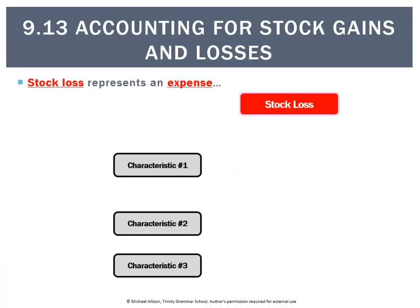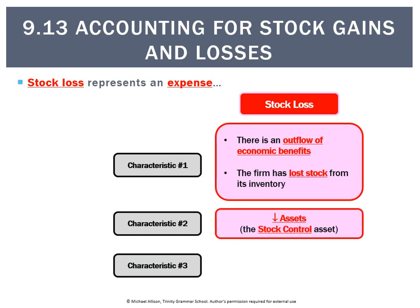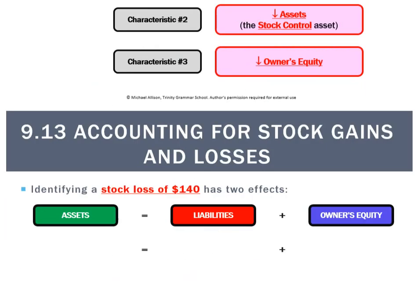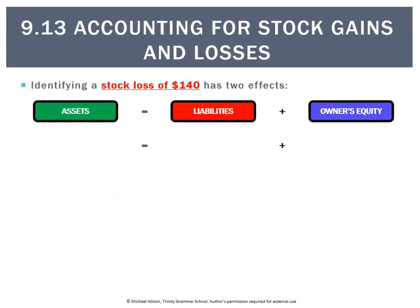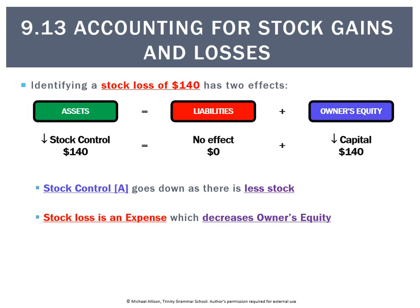The business has suffered a stock loss of $140. How do we account for that? That's the stock card part, and we've got to realise that a stock loss is actually an expense. Going through the characteristics of an expense and applying them to a stock loss: there's an outflow of economic benefits — in this case, the stock lost from the firm's inventory. There's a decrease in assets — specifically the stock control asset — and overall there'll be a decrease in owner's equity. The effect on the accounting equation is stock control goes down, no effect on liabilities, and owner's equity goes down $140.